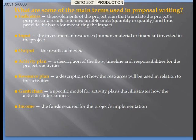Key themes used in proposal writing include: indicators — elements of the project plan that translate results into measurable units of quality and quantity, providing a basis for measuring impact; inputs — the investment of human, material, and financial resources in the project; outputs — the results achieved; activity plan — a distribution of flow, time, and responsibility for project activities; resource plan — a distribution of how resources will be used in relation to activities; Gantt chart — a model illustrating how activities are interconnected; and income — the funds secured for project implementation.